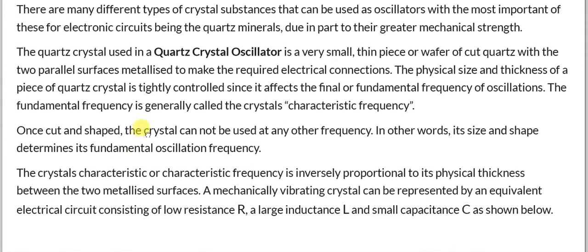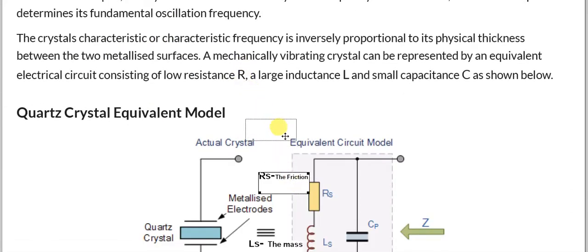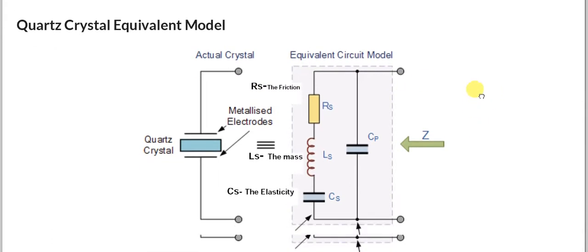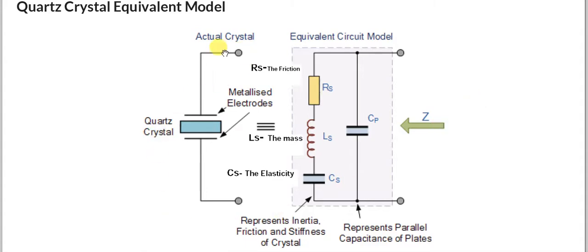Now let us look at the quartz crystal equivalent circuit model. The crystal is a quartz wafer embedded between two metallic plates — these two metallic plates sandwich the quartz crystal. This total quartz crystal structure can now be represented as an equivalent circuit model. We have a parallel capacitor Cp, which is due to these two metallic plates.